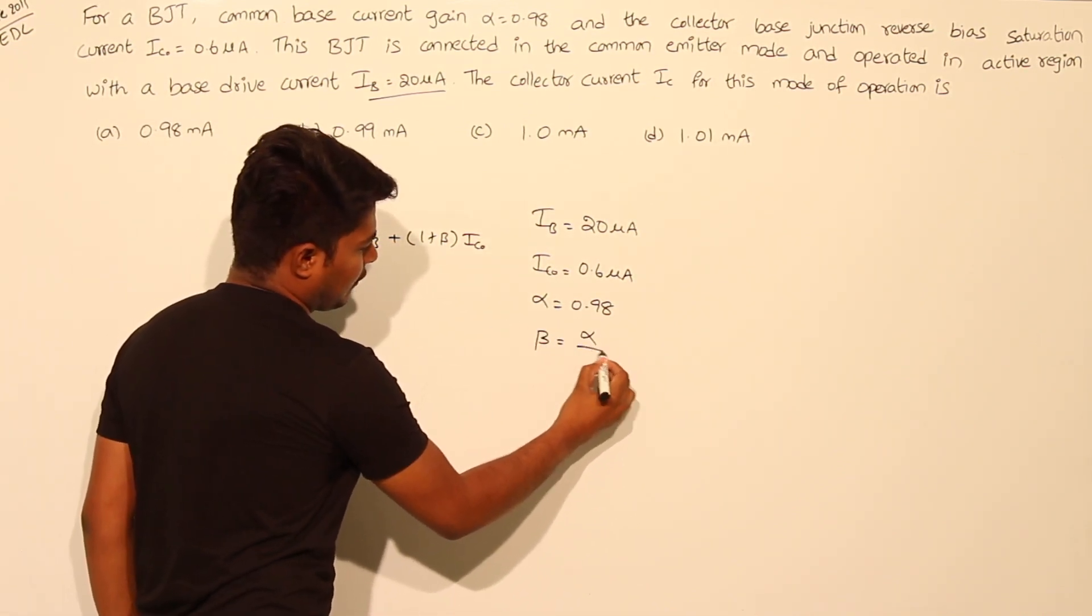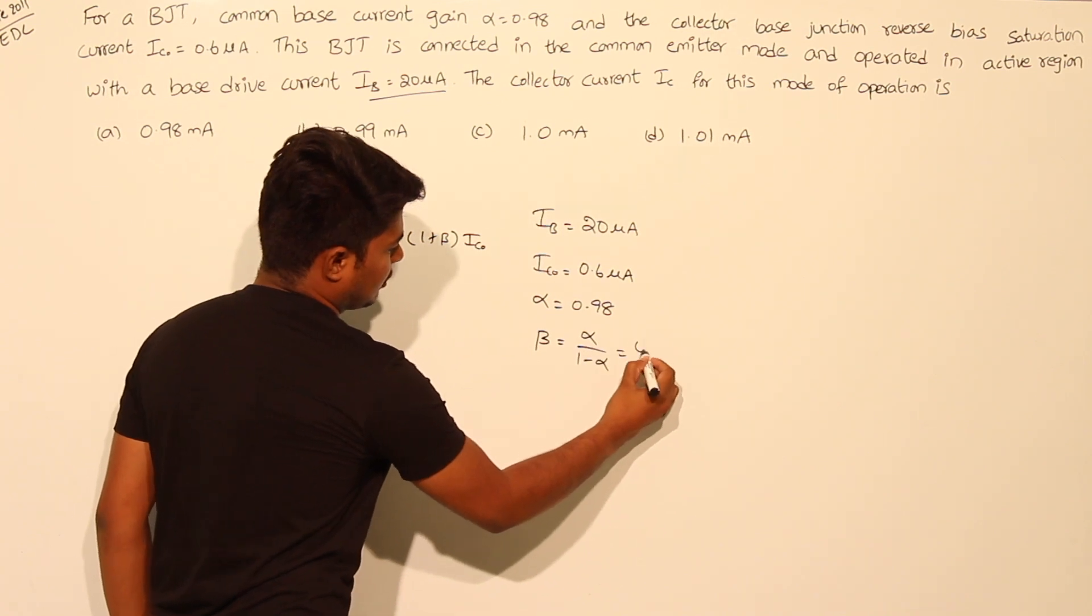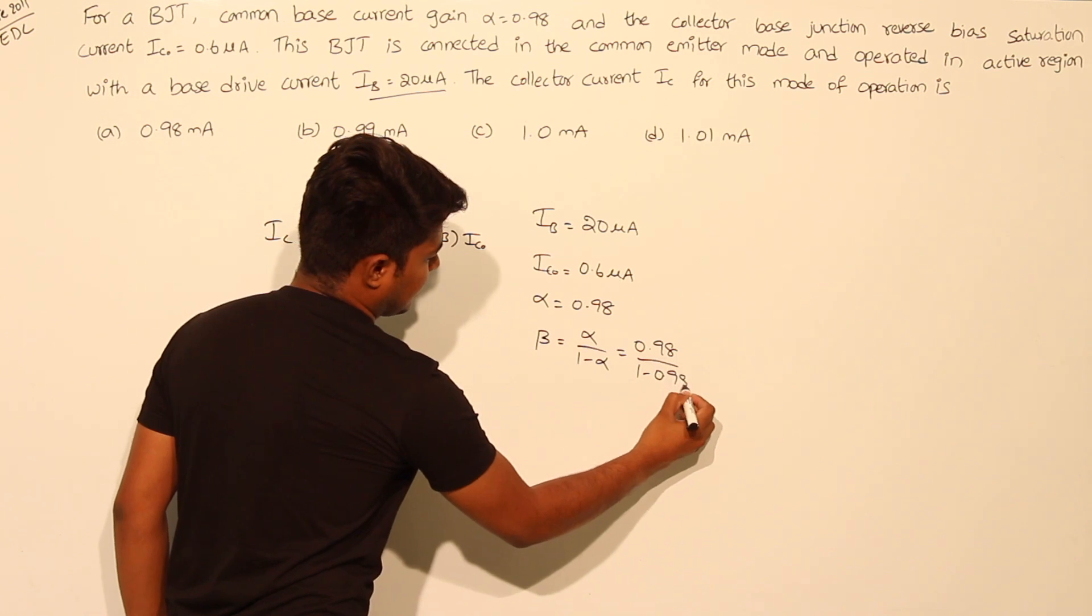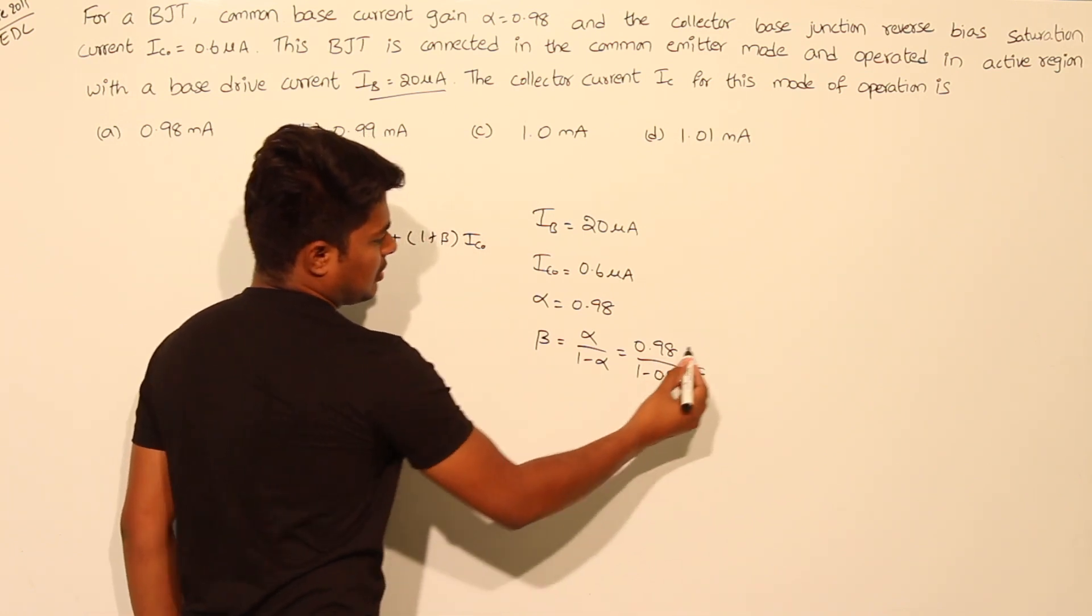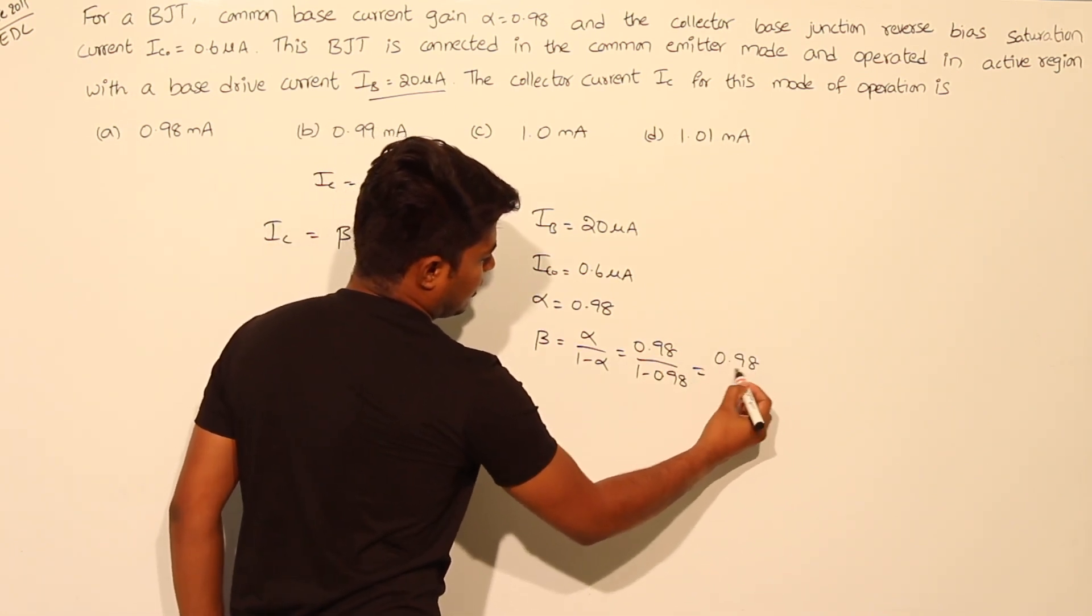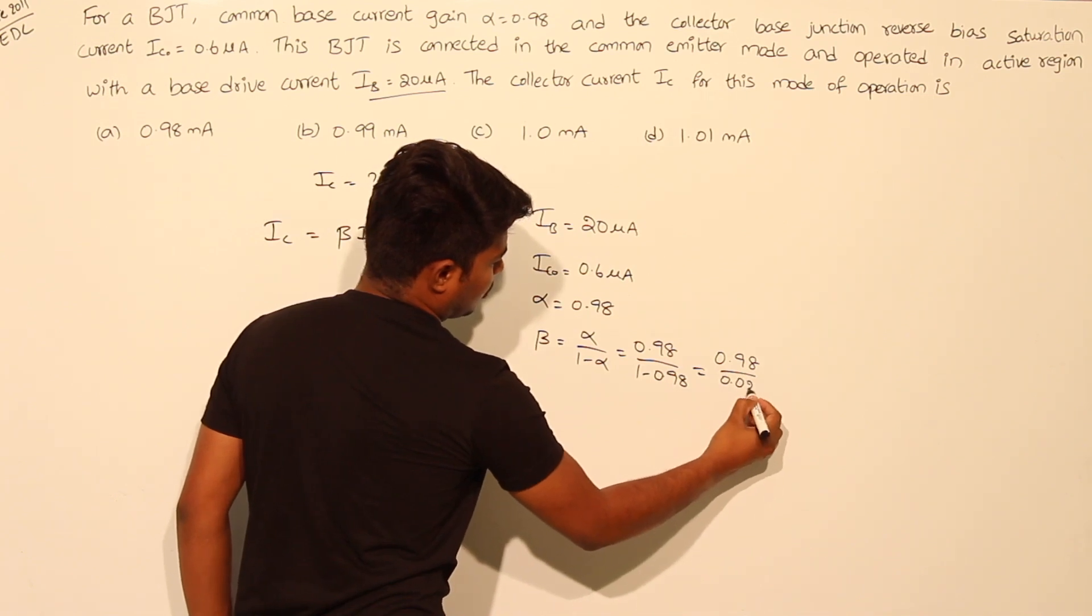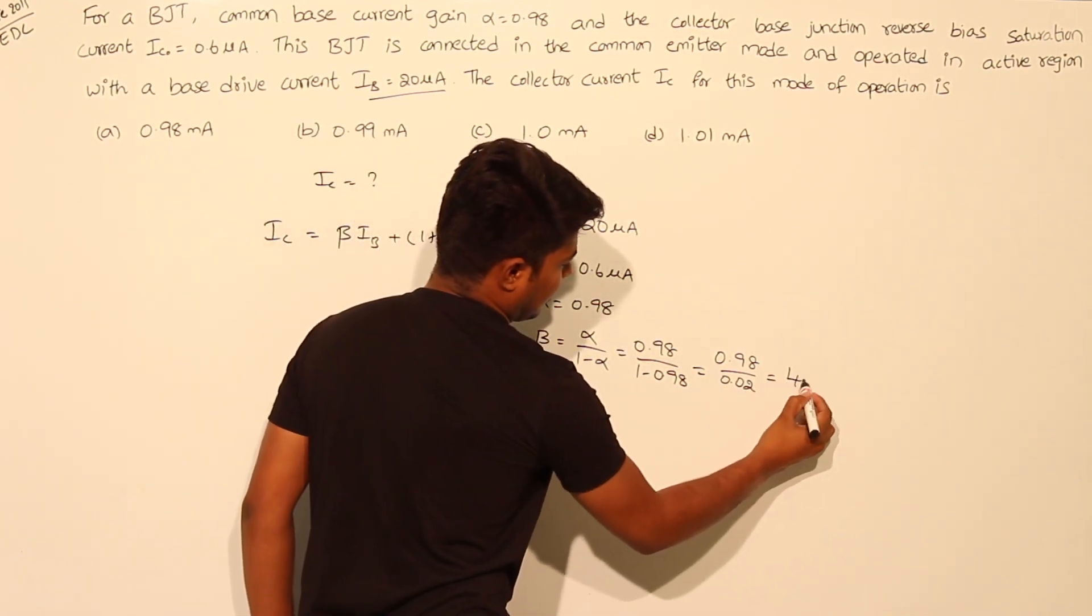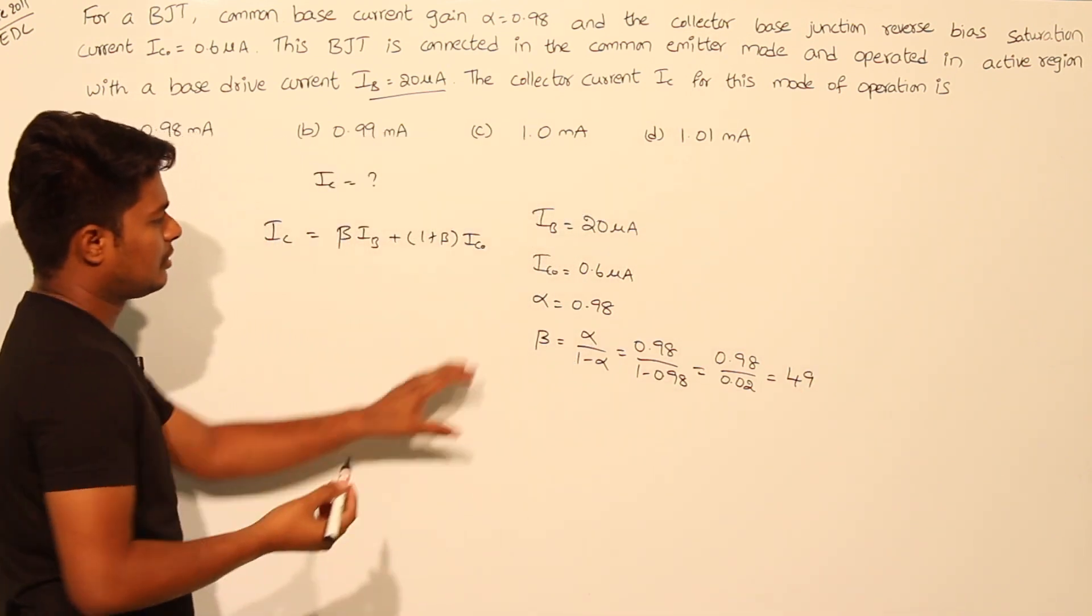We know the relationship between alpha and beta: beta equals alpha by (1 minus alpha), that equals 0.98 by (1 minus 0.98). This will be equal to 0.98 by 0.02, and if you solve this you will get approximately 49.